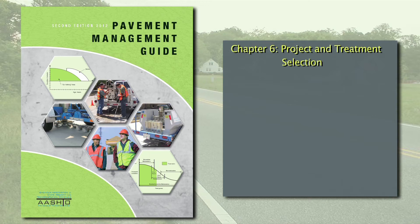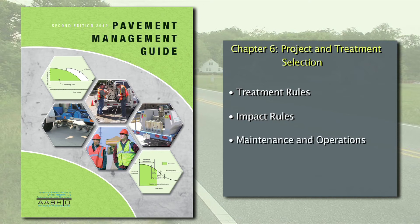Chapter 6, titled Project and Treatment Selection, illustrates methods used to identify and prioritize pavement preservation and rehabilitation projects. This includes both treatment rules, which should describe the condition under which a treatment is considered feasible, and impact rules, which describe the pavement performance that might be expected following the application of a treatment. The chapter also discusses the importance of coordinating pavement management with maintenance and operations.